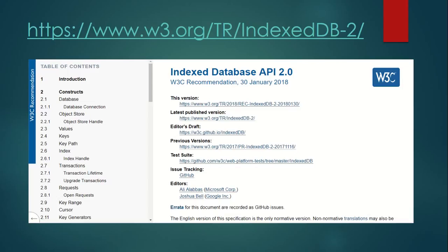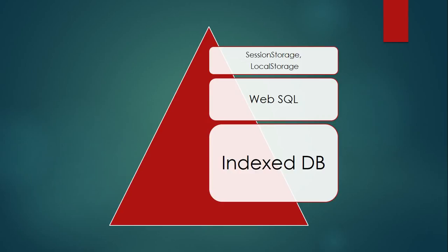If we talk about IndexedDB, initially we had cookies to store some textual data inside the browsers. Later on, in modern browsers, we got many more storage options like session storage, local storage, and Web SQL. Session storage and local storage had limitations to store data up to 5 MB. Later on, Web SQL came up and we had the ability to store about 20 MB of data. Now, as Web SQL is being deprecated, IndexedDB provides the solution to store offline data.